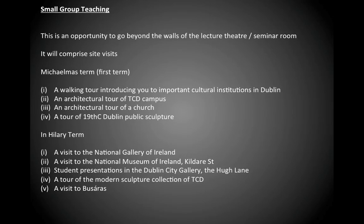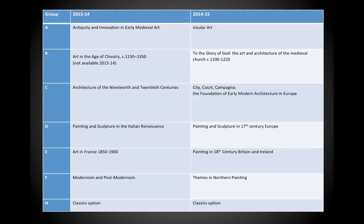Some people have asked about the number of hours spent in History of Art. You have four lectures per week — Monday, Tuesday, Thursday and Friday — plus a seminar every week, bringing it to five contact hours, and then site visits at intervals. You can see what these site visits include: a walking tour to introduce you to the institutions, an architectural tour of the campus, an architectural tour of a church, a visit to look at sculpture, and visits to the National Gallery — nine site visits across the year. These are an additional benefit in terms of learning and introduction to the National Collections.